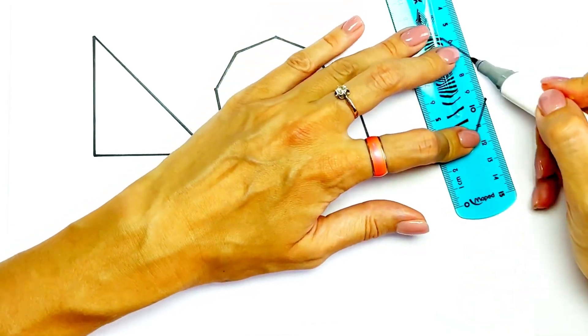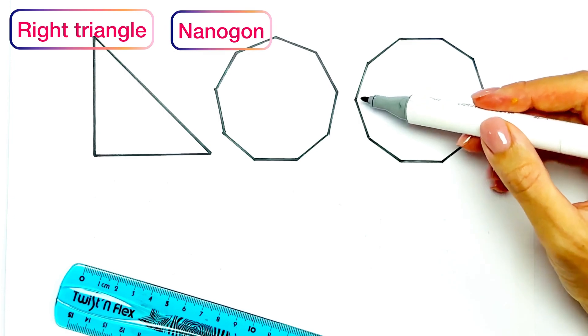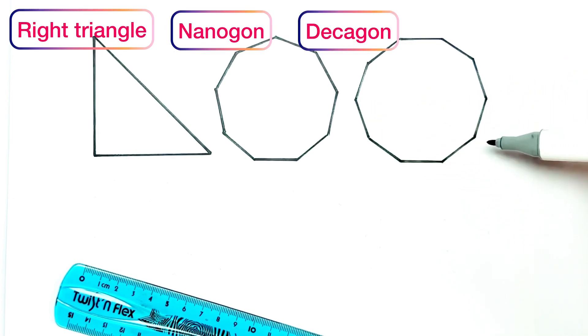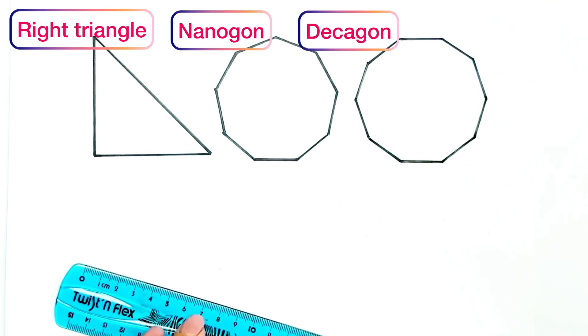Nonagon. One, two, three, four, five, six, seven, eight, nine, ten. Ten angles.